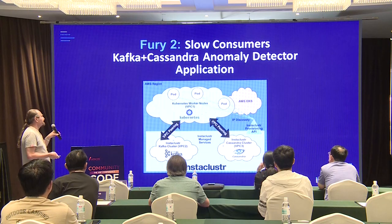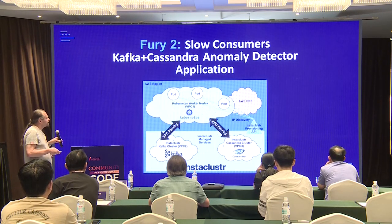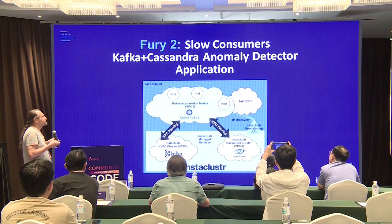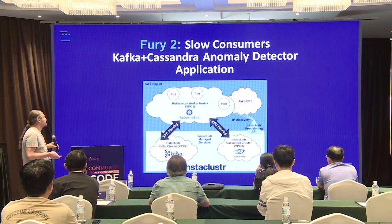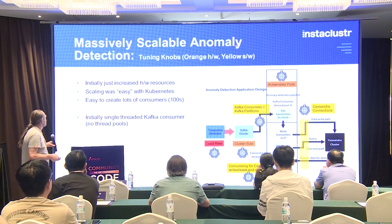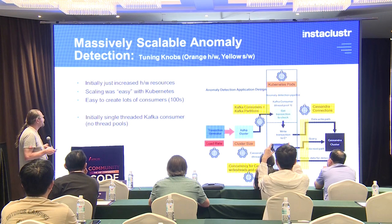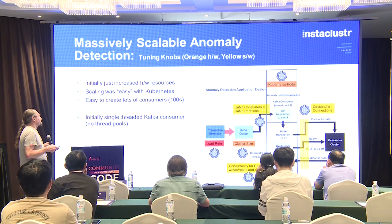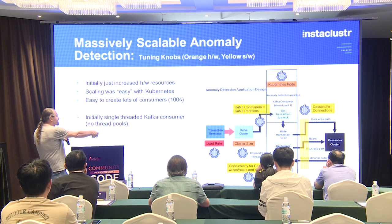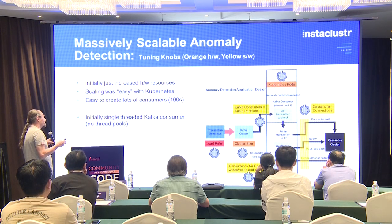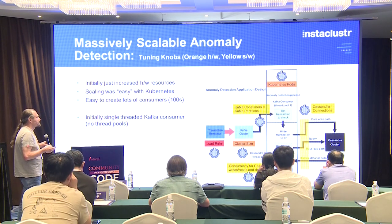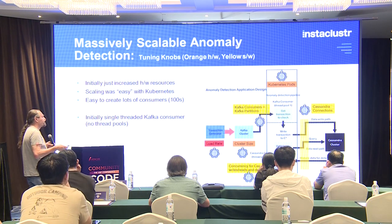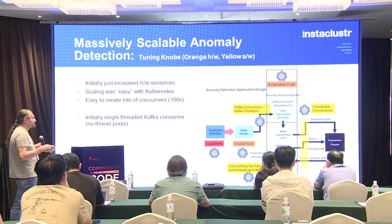The second fury is slow consumers. This is what I discovered when I built my second Kafka application — an anomaly detector system using both Kafka and Cassandra in conjunction with Kubernetes to handle resourcing of the client application code. It was a massively scalable anomaly detector. The load comes in on the left-hand side, generated by Kafka producers. There's a whole bunch of Kafka consumers running on Kubernetes, which interact with the Cassandra database to store events and retrieve historic data needed for anomaly detection.